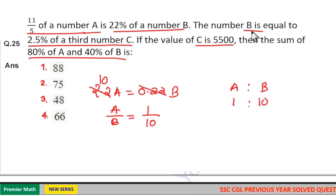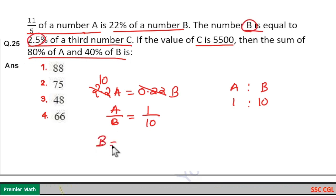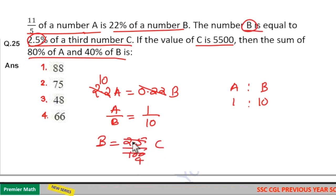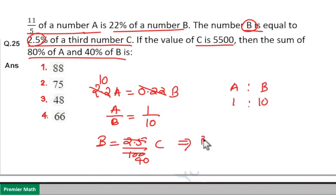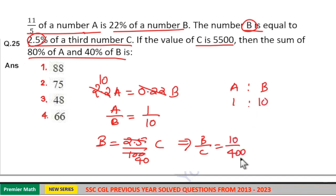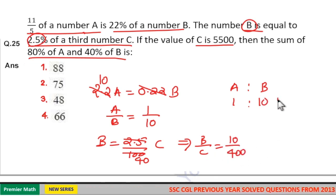Now B is equal to 2.5 percentage of C. Since 25 goes 4 times in 100, so 2.5 goes 40 times in 100. So B by C ratio is equal to 1 by 40. But here B is 10 part, so multiplying numerator and denominator by 10, B is equal to 10 part and C is equal to 400 part.